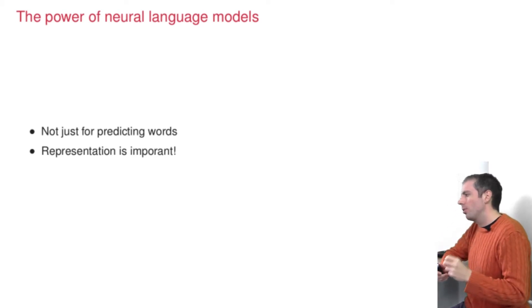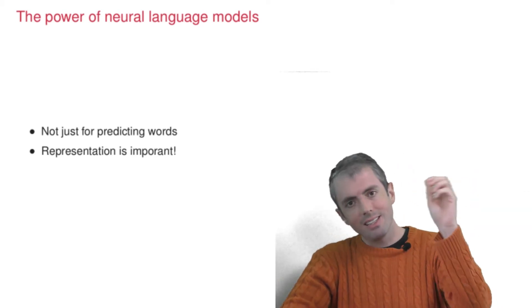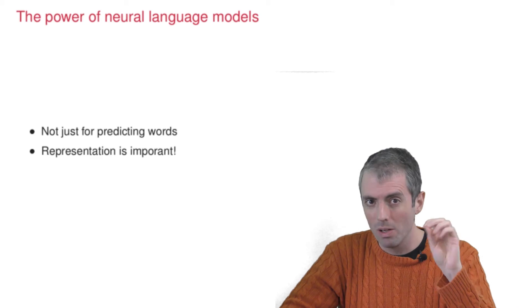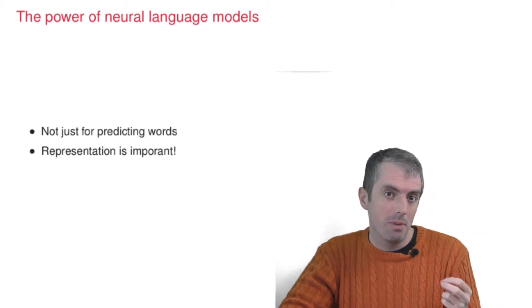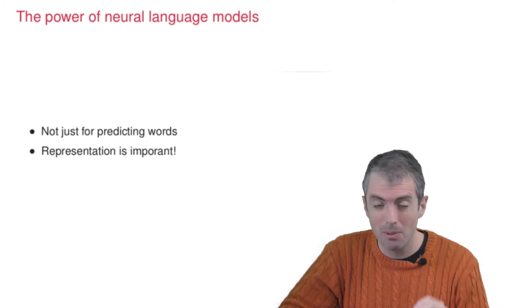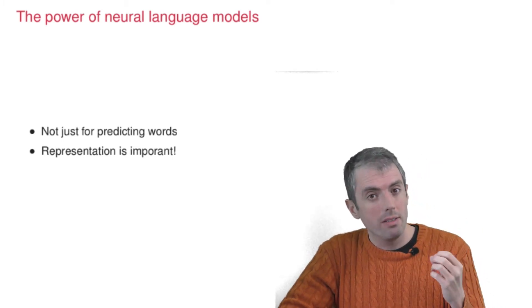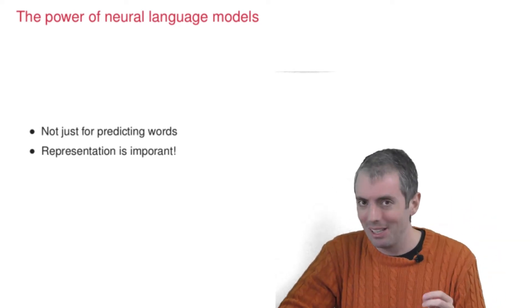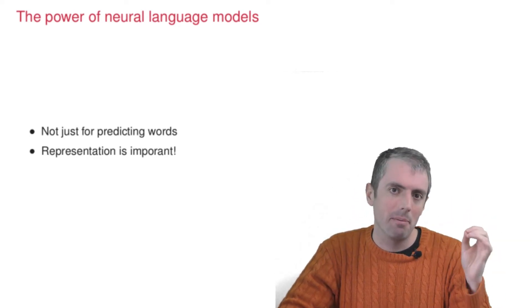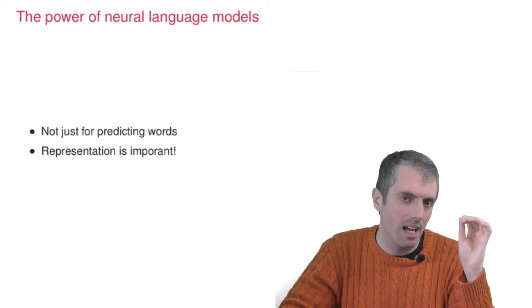They're not just for predicting words. Just like how we talked about Word2Vec as an important tool for representation, neural language models create even better representations. Word2Vec gives you one vector per word. The nice thing about neural language models is that you now have a representation of a word in context.